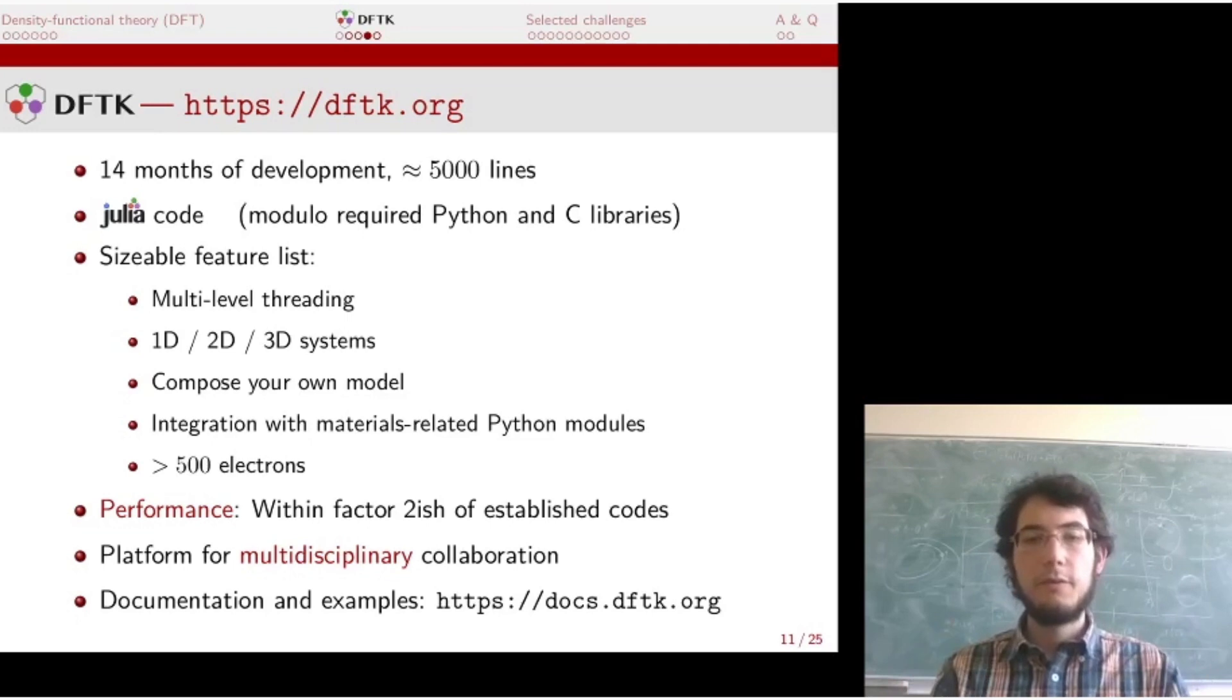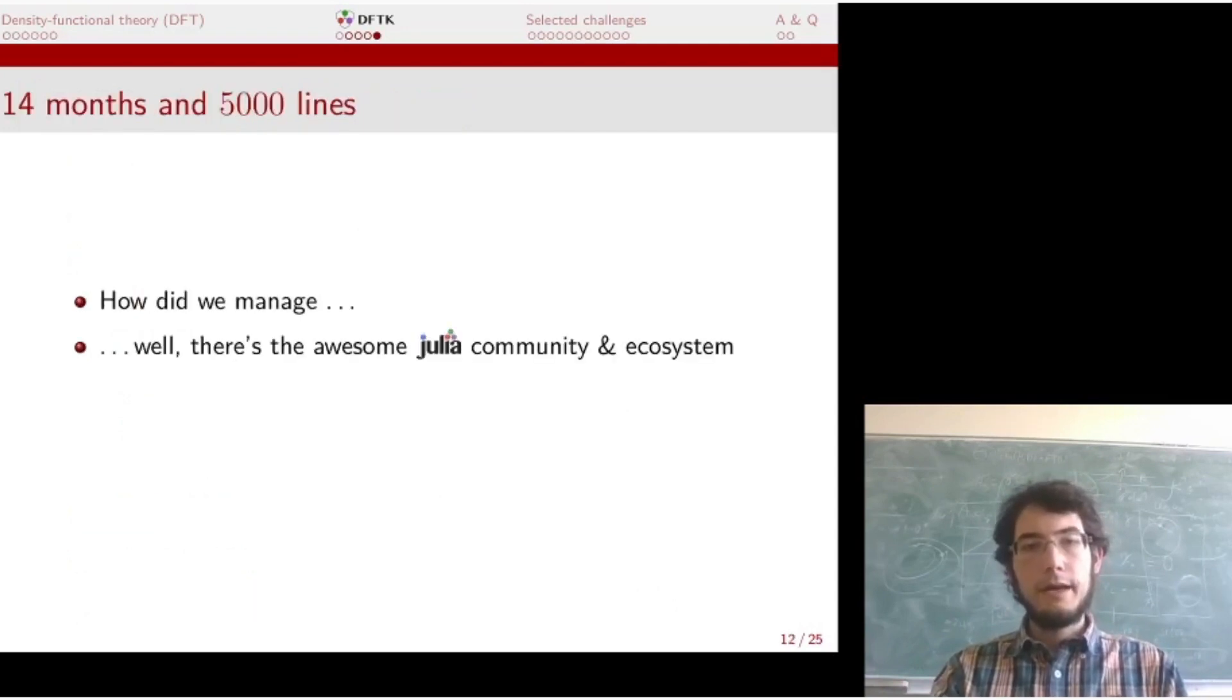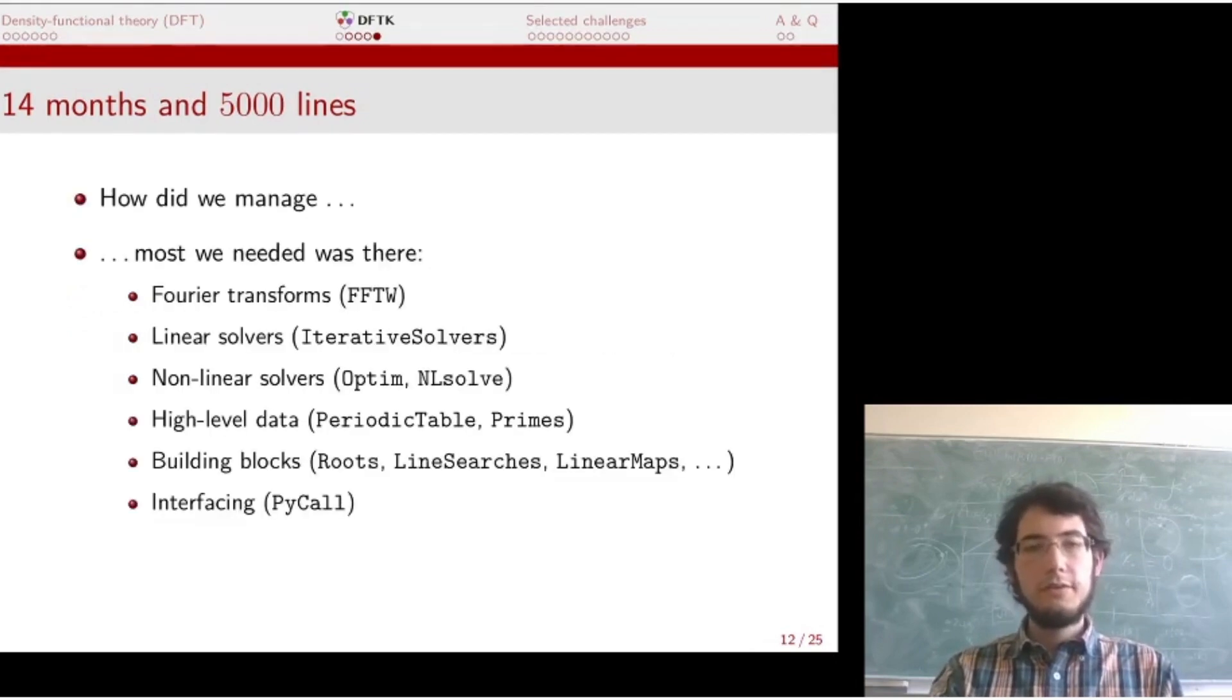Now 14 months and 5,000 lines of code for something such as DFT is actually challenging, I can tell you that from my experience. Basically, the only way we really manage is because from the Julia community there is already a pretty awesome set of packages around in the ecosystem. Just to give you an idea, when we started, we just looked what was around and we found that Fourier transforms are there with FFTW. Non-linear solvers for this non-linear SCF problem—we can just use Optim—and solve, and so on. A lot of building blocks for the things we required were just there. We could just use it. I really have to say thanks at this point because I don't think we would have been able to manage within the time and also within the shortness of the code if all of this ecosystem has not been around.